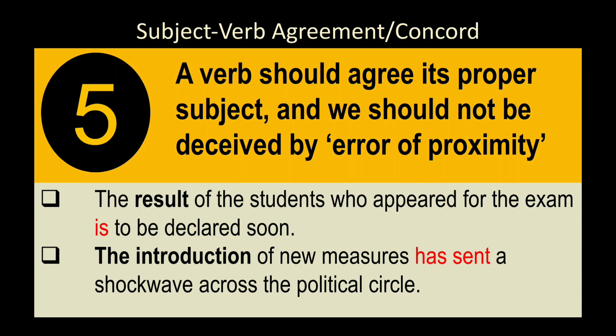Rule 5: A verb should agree with its proper subject — do not be deceived by the error of proximity. Sometimes the subject is far away and a nearby word (plural or singular) misleads us. For example: 'The result of the students who appeared for the exam is to be declared soon.' The subject is 'the result,' not 'students' or 'exam.'